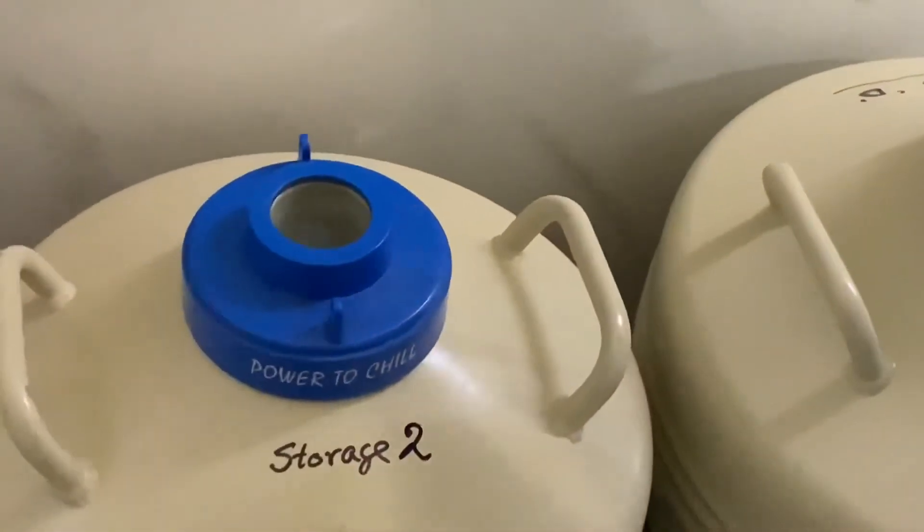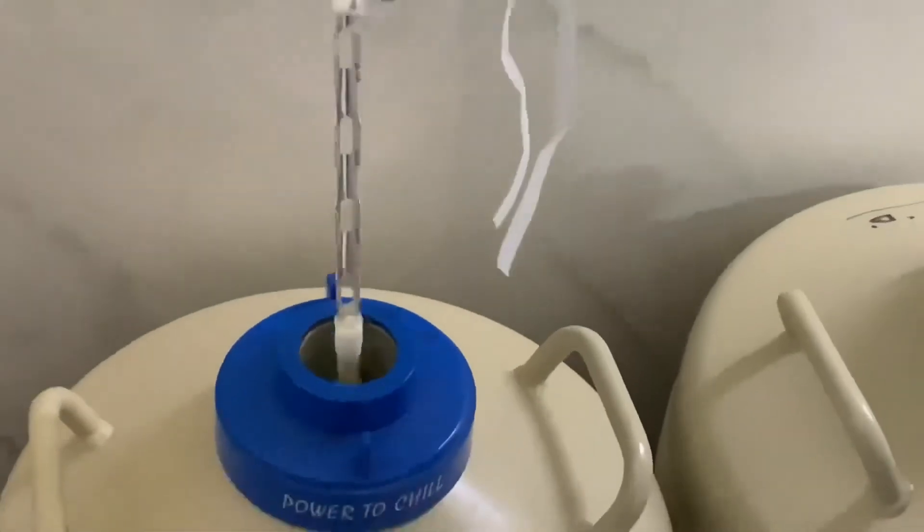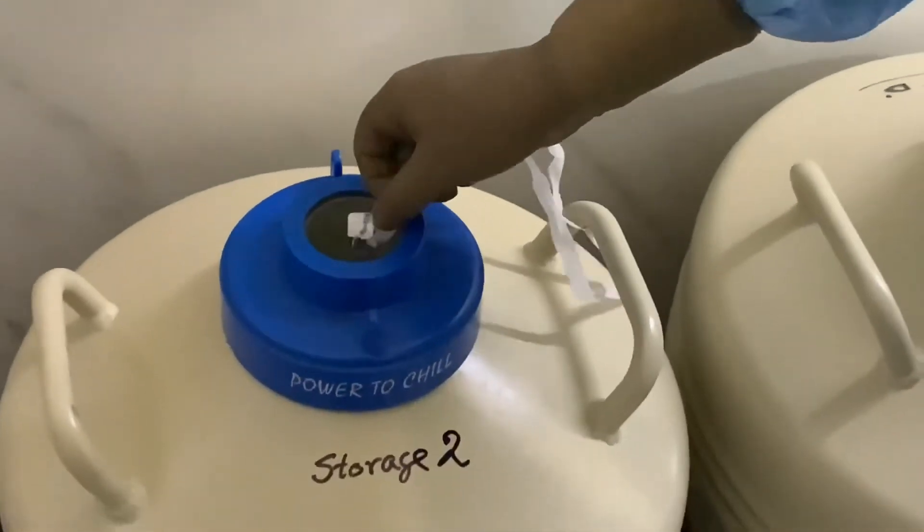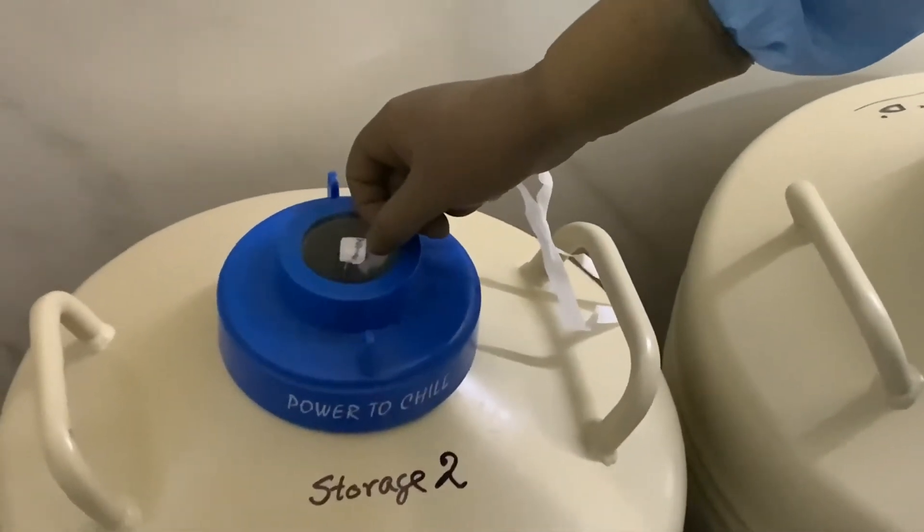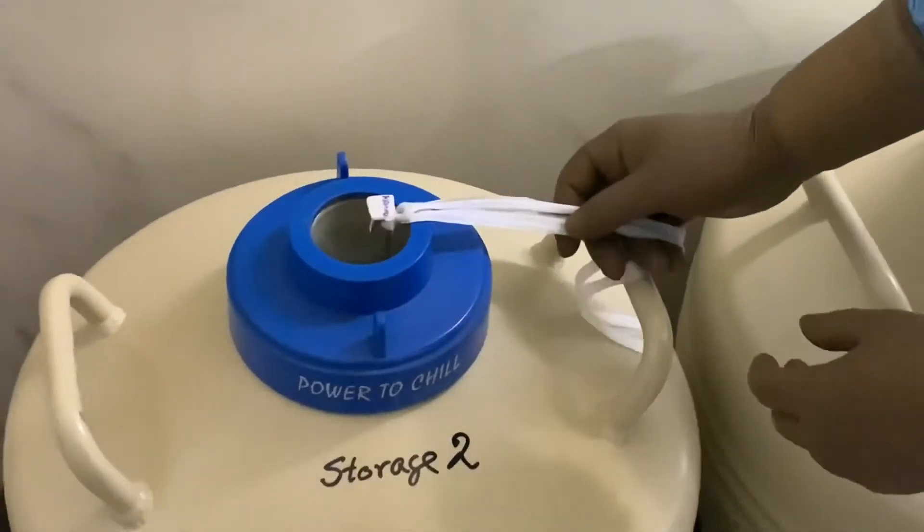Now we are going to the liquid nitrogen can. So here inside this liquid nitrogen is there. We will be plunging this particular one inside the liquid nitrogen vapor for at least half an hour. We will be keeping it like this.